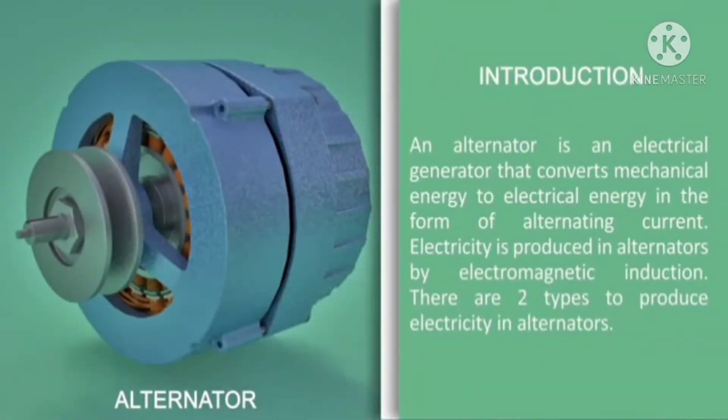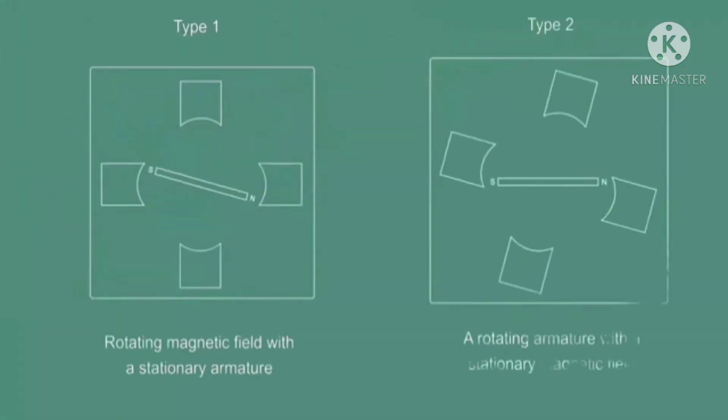An alternator is an electrical generator that converts mechanical energy to electrical energy in the form of alternating current. Electricity is produced in alternators by electromagnetic induction. There are two types to produce electricity in alternators.